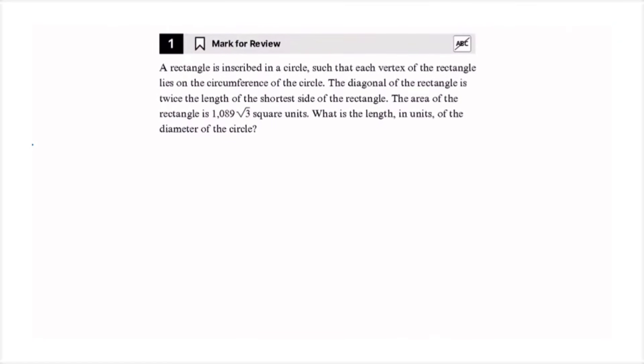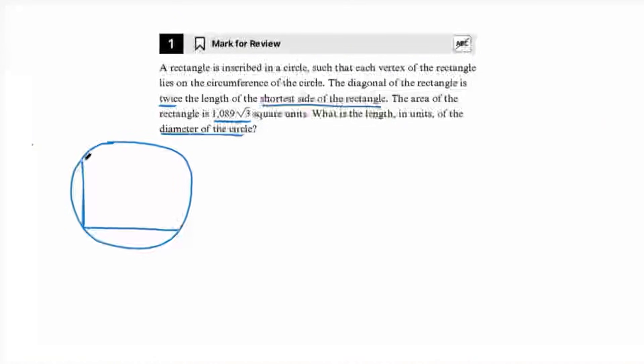A rectangle is inscribed in a circle, such that each vertex of the rectangle lies on the circumference of the circle. The diagonal of the rectangle is twice the length of the shortest side of the rectangle. The area of the rectangle is 1089 root 3 square units. What is the length in units of the diameter of the circle? First, let's try to visualize what they're saying. So when a rectangle is inscribed in a circle, that means the rectangle is drawn inside of the circle. And it would be drawn like this. Now, let's label the sides. So it says that the diagonal of the rectangle is twice the length of the shortest side of the rectangle. So we can label the shortest side x. The diagonal would be 2x, since it is twice the length.